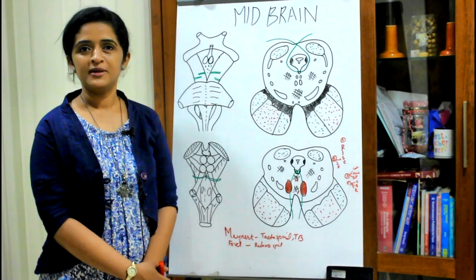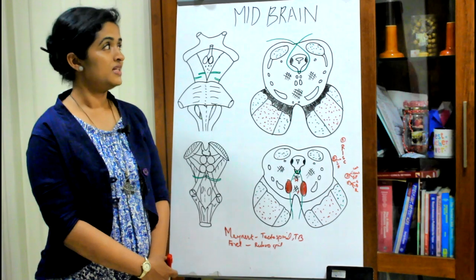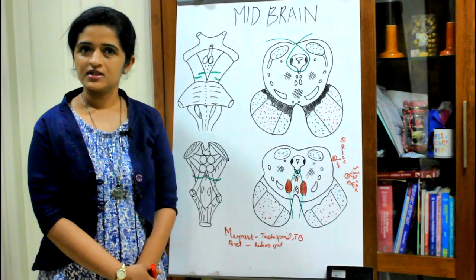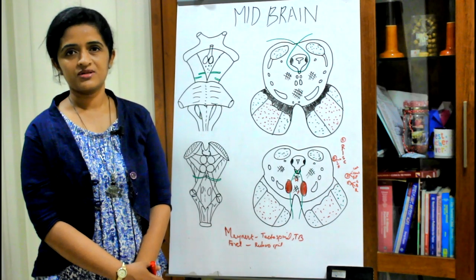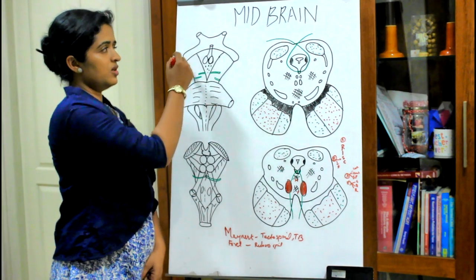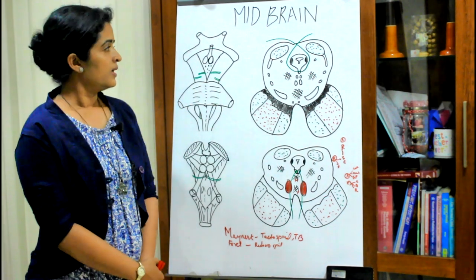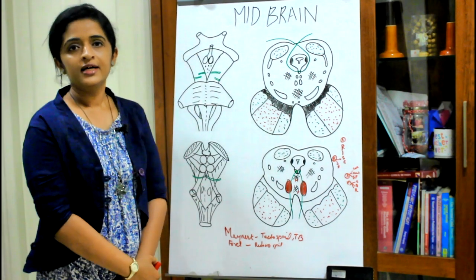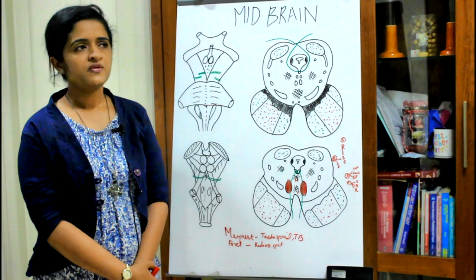Welcome back. Today's session is on midbrain. I would like all of you to go through my previous session on the details of pons so that it will be easy for you to understand midbrain better. When we discuss about a brainstem, we discuss it under two main headings: the external features and internal features. Midbrain is the region of the brainstem that connects the forebrain with the hindbrain. It is roughly 2.5 centimeters in width and 2.5 centimeters in length.